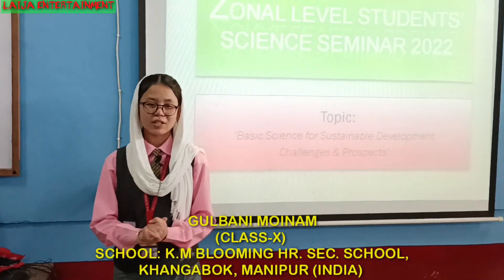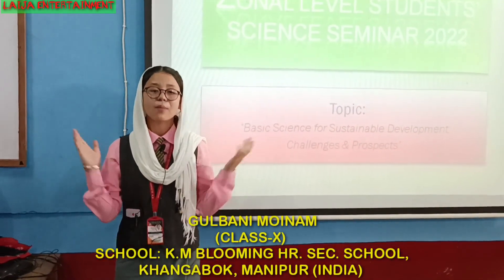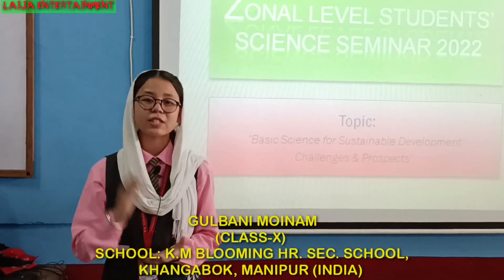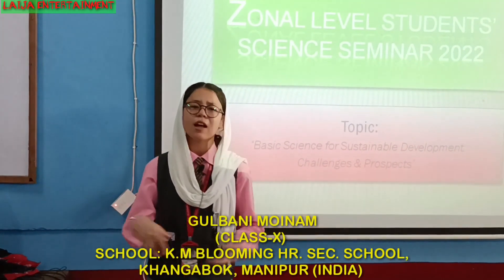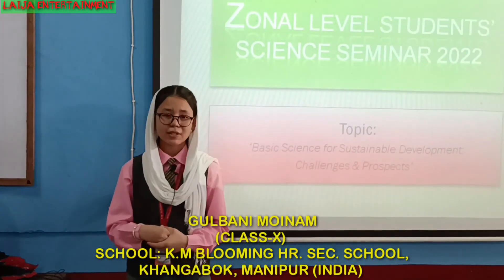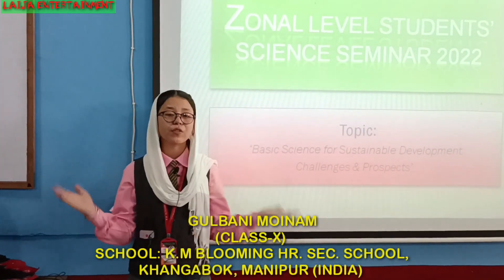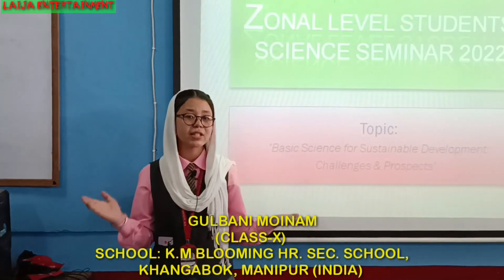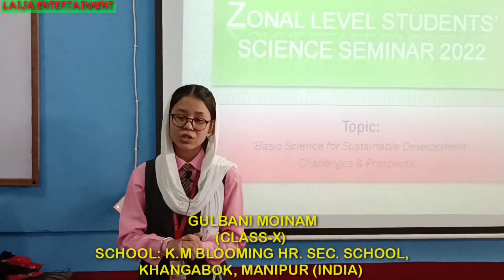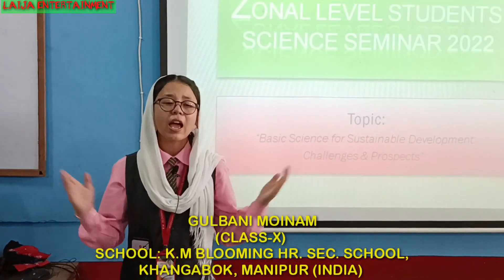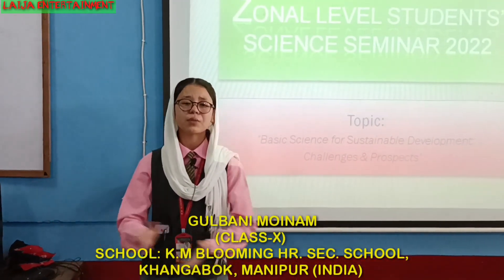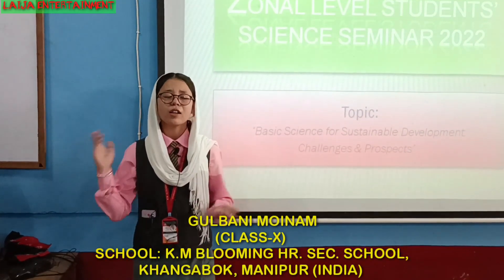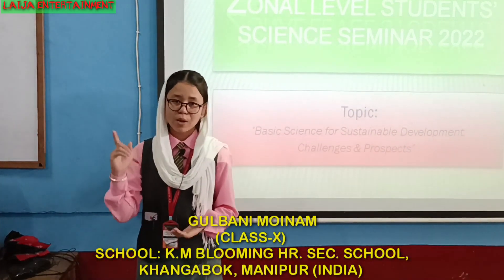Let me explain what Basic Science is. Basic Science is defined as the scientific aspects of mathematics, physics, chemistry, and biology. They are called Basic Science because they provide fundamental understanding of natural phenomena and processes by which natural resources are transformed. Basic Science also plays an important role for sustainable development. Now, let me describe each one by one.